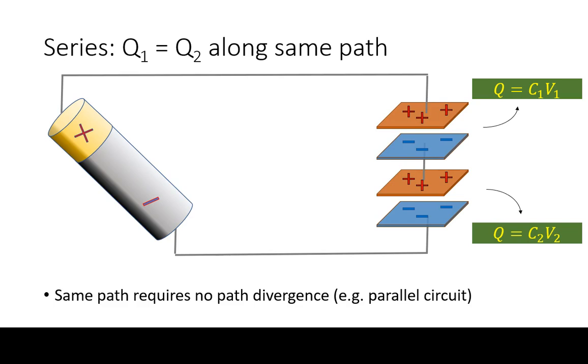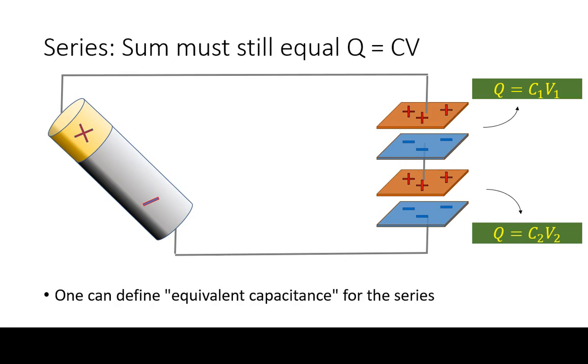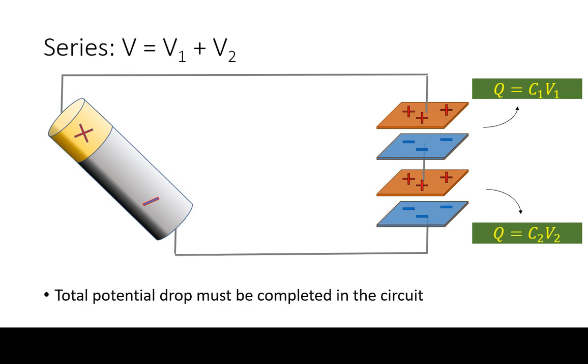This implies that depending on capacitance, each element will have different voltage drop across. The entire circuit must still equal that provided by our source of electromotive force. In this case, this means along a series path, the voltage must add up.